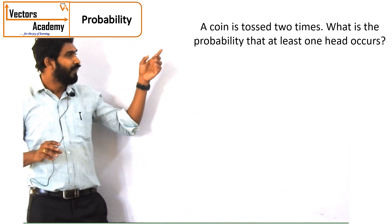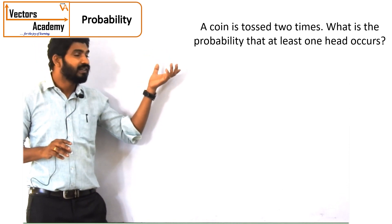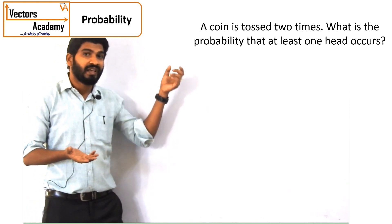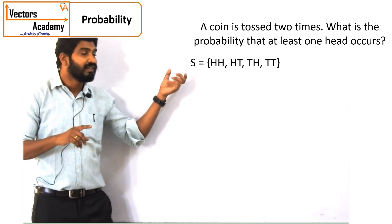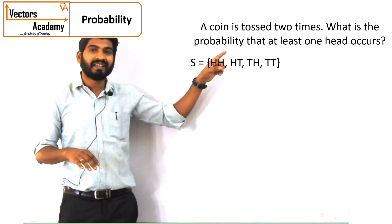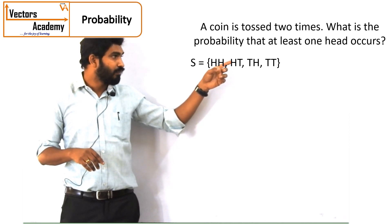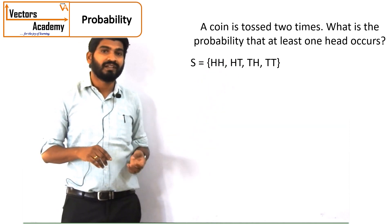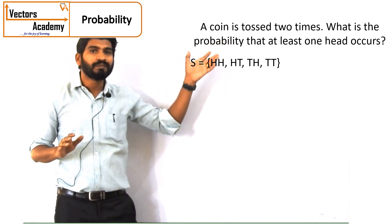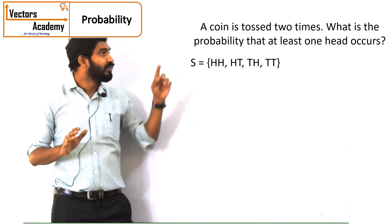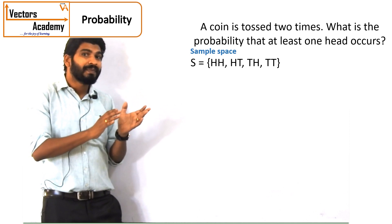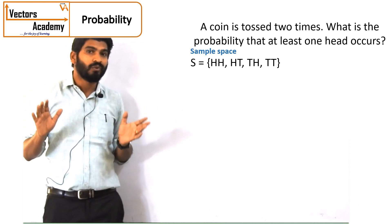A coin is tossed twice, so we will make a set of different events that could occur. If a coin is tossed twice, there are chances that both times head occurs, a chance that the first time it is head and the second time it is tail, a chance that the first time it is tail and the second time it is head, and another chance that both times it shows tail. These are the only 4 possibilities.